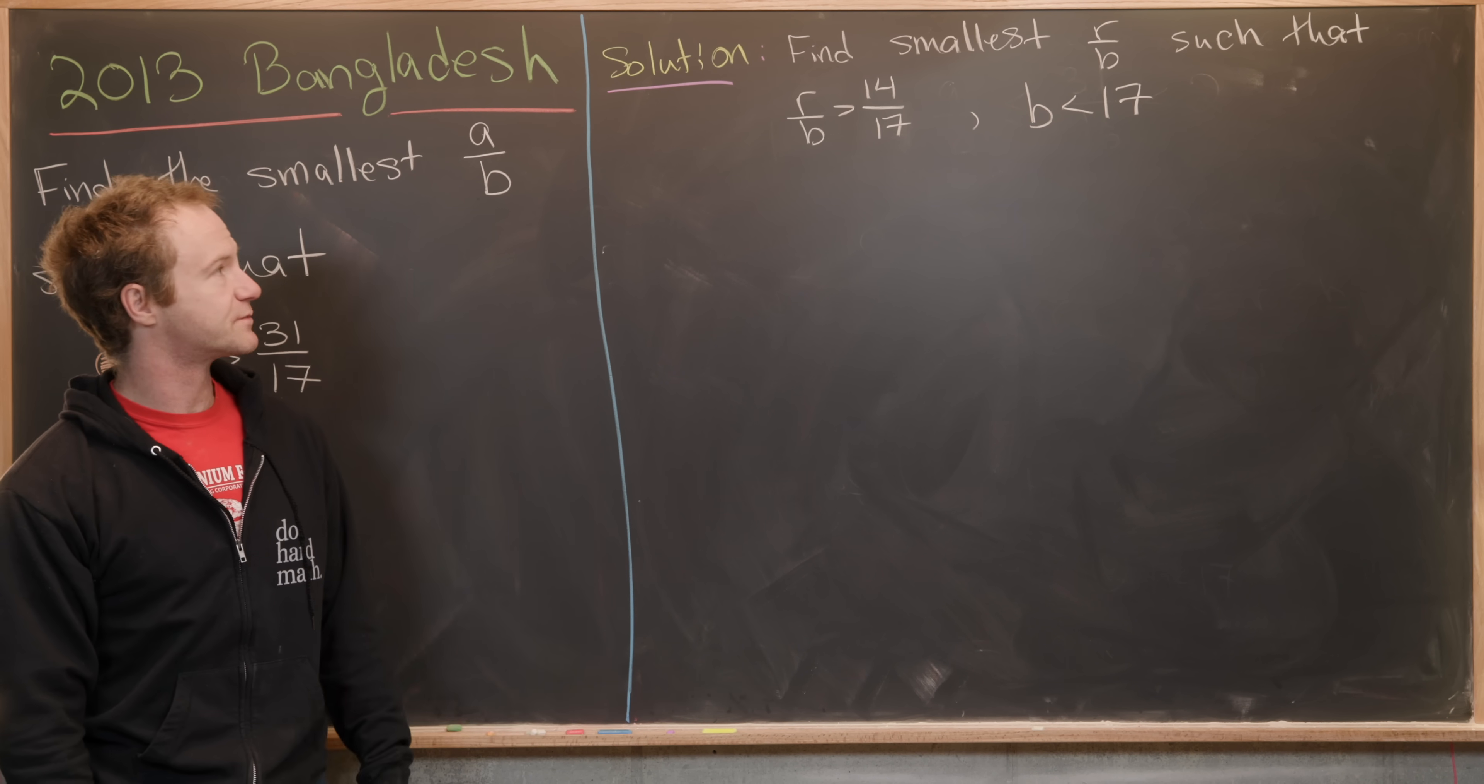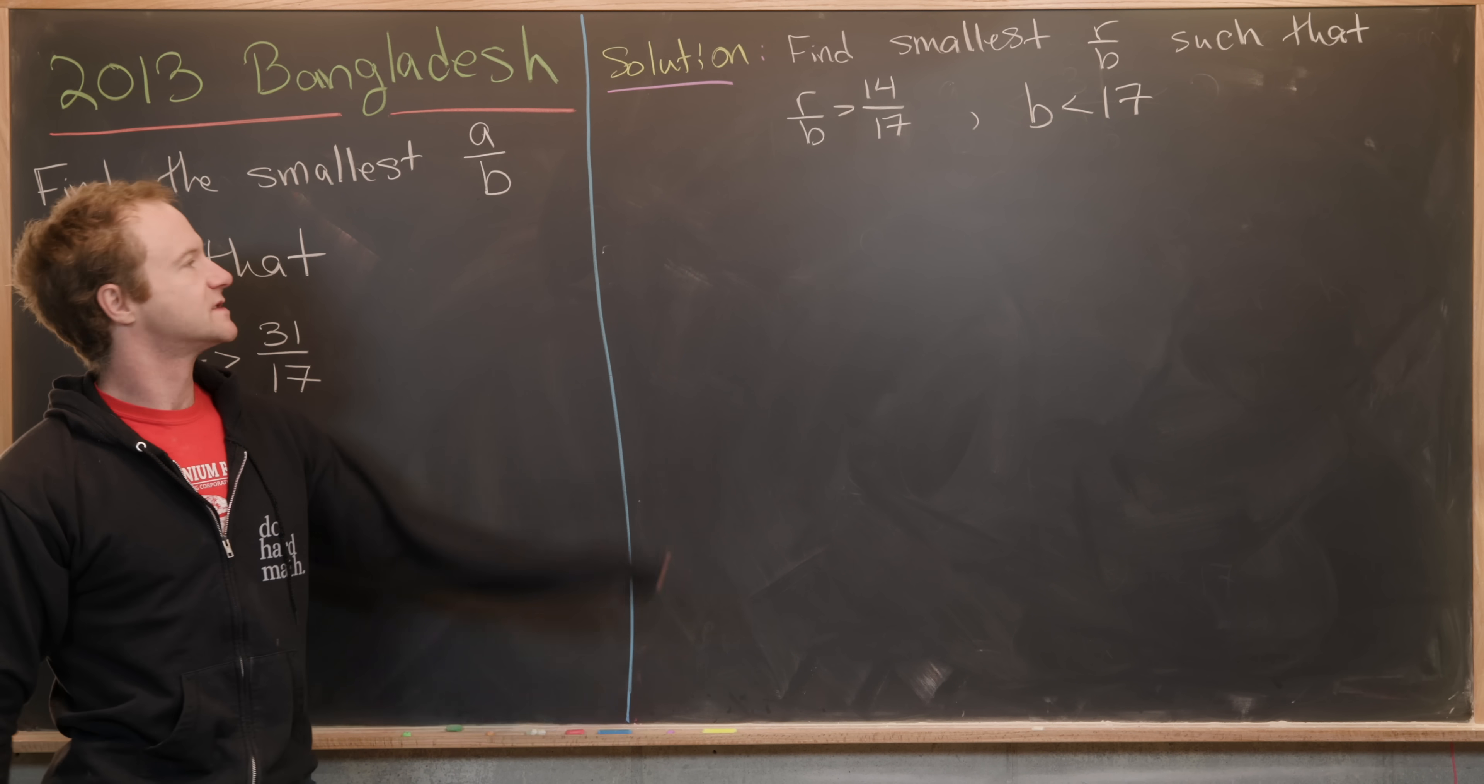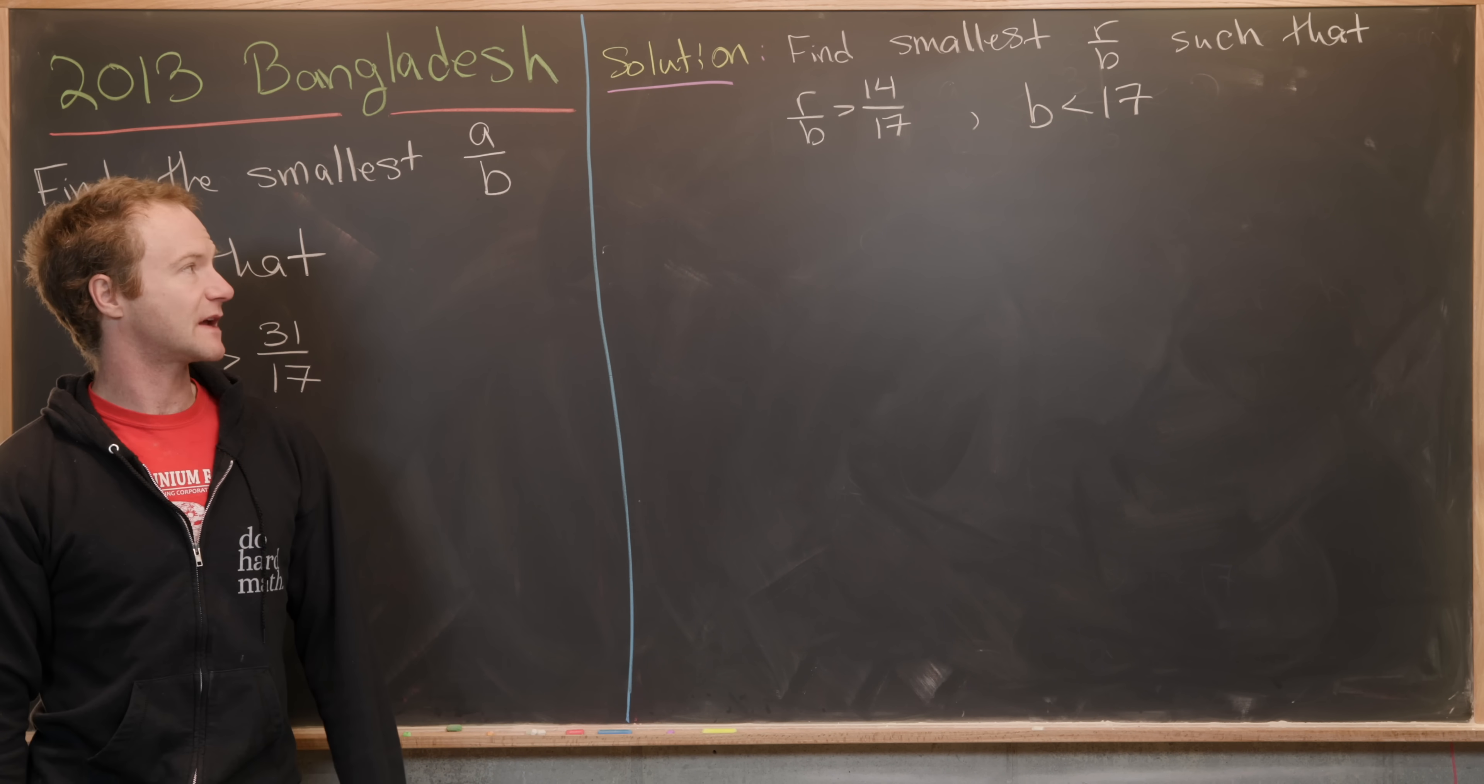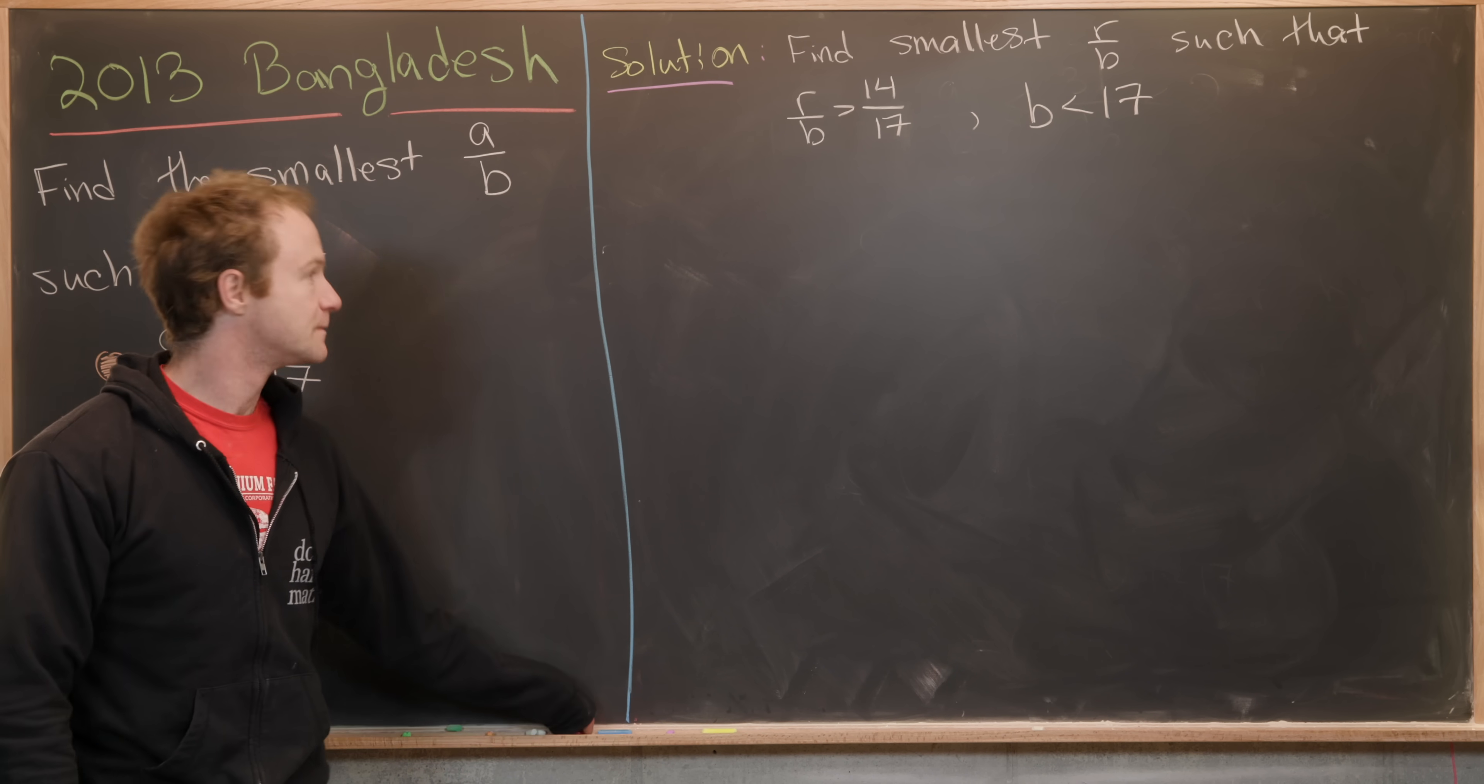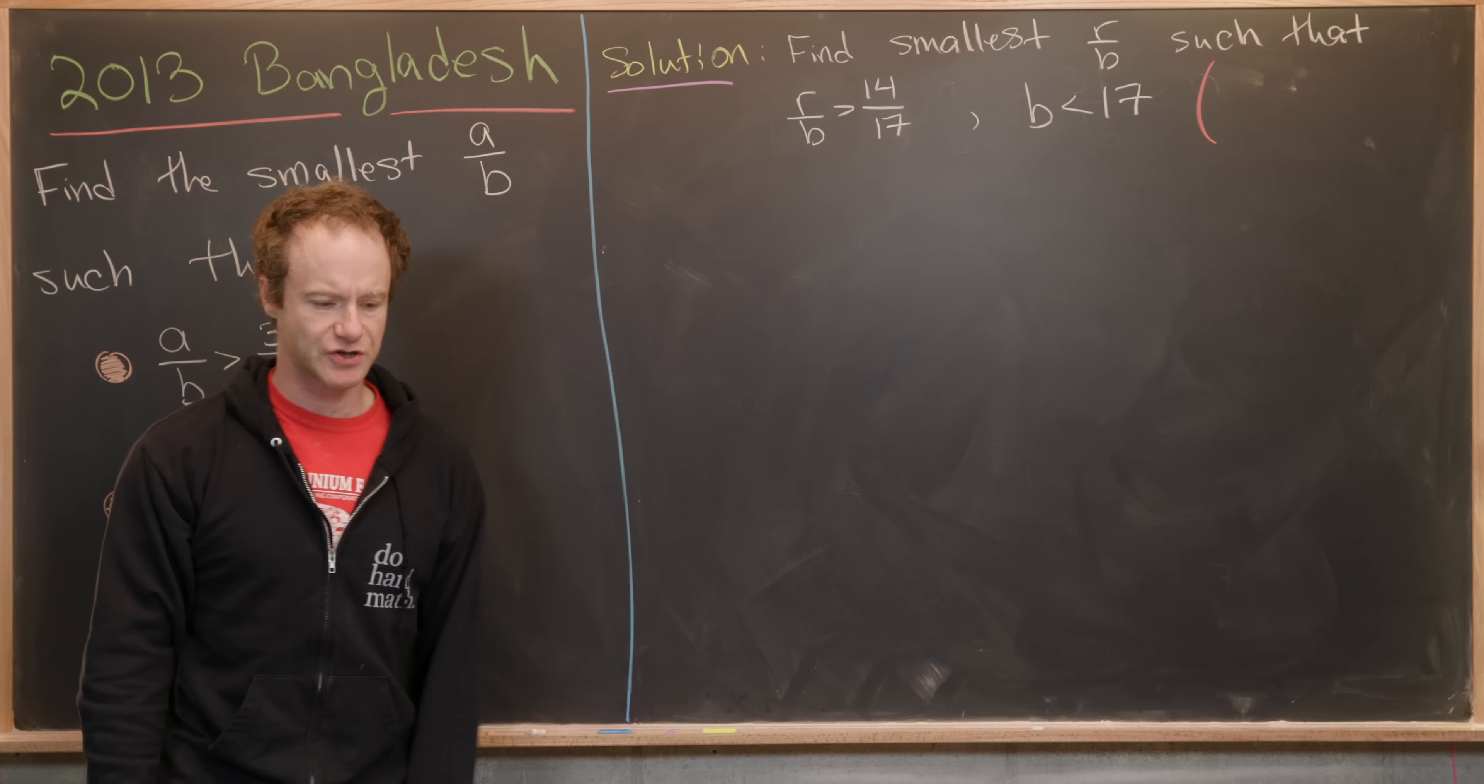We reduced this problem to finding the smallest R over B such that R over B is bigger than 14 over 17, and B is less than 17. I want to point out here that via our calculation before, R played this role of a remainder.